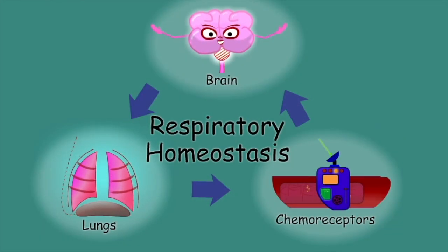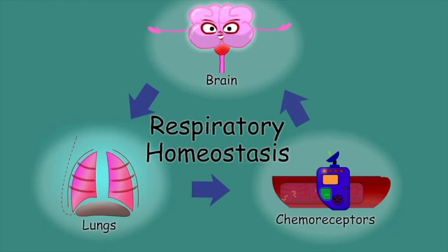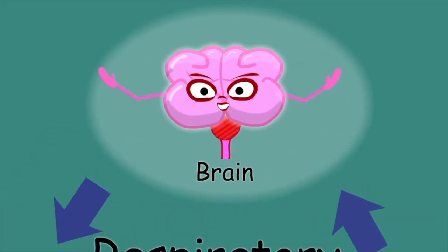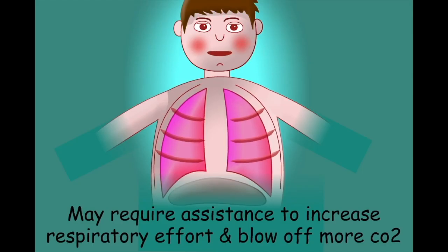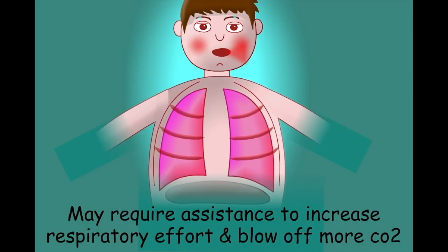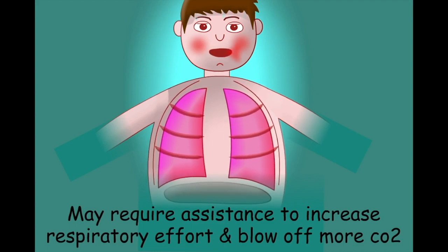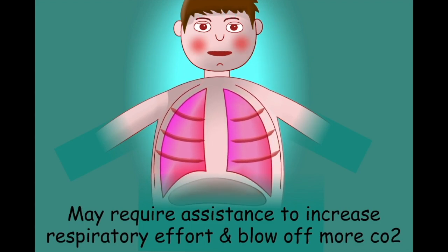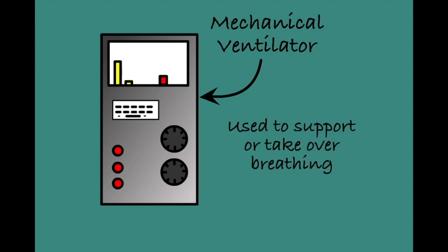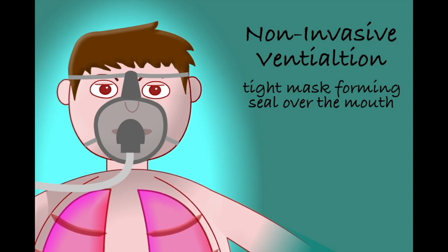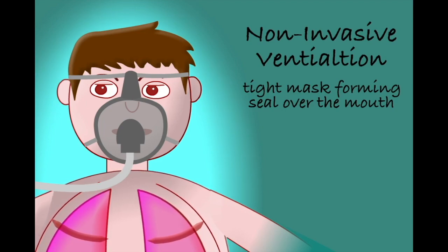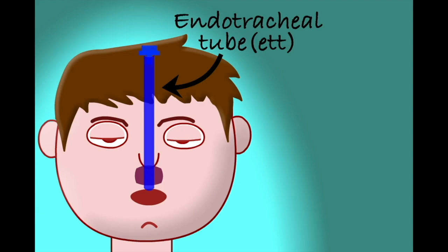Hypercapnia may sometimes be resolved by treating a reversible cause. An opiate overdose, for example, may be reversed with a naloxone injection. In many cases, however, treatment will involve assisting the sufferer to take deeper and potentially more rapid breaths to help them blow off more CO2. This will generally involve the use of a mechanical ventilator, either by a non-invasive mask or an endotracheal tube.